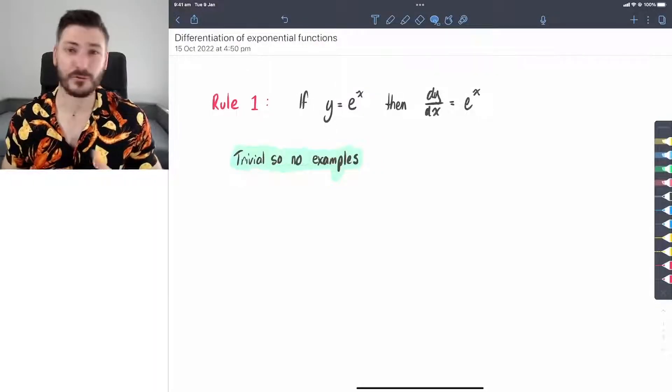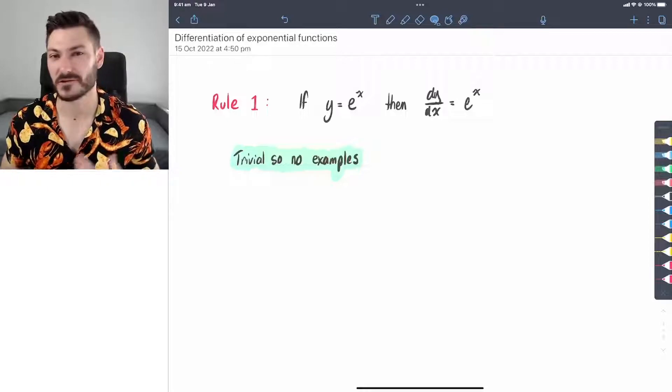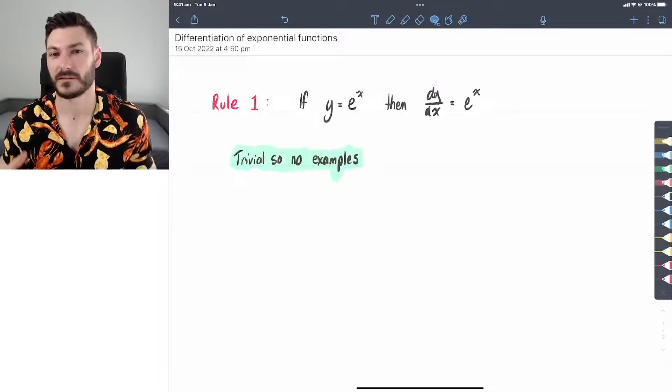Despite e being an irrational number, exponential functions are some of the easiest functions to find the derivative of.